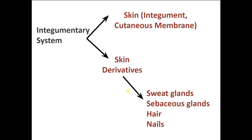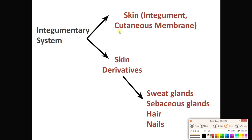If we're talking about the integumentary system, we are number one talking about the skin. Integument means skin. Not only is the skin known as the integument, it's also called the cutaneous membrane. So skin, integument, cutaneous membrane — those are three synonyms. In A&P class, we like to have at least three different names for the same thing.